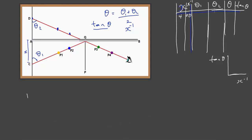From the law of reflection, the angle of incidence theta i is expected to be equal to theta r, the angle of reflection. Now, how does theta i relate to theta 1 and theta 2? From geometry, line AC is parallel to line PQ. Because they are parallel, angle theta 1 and angle theta i are alternate angles, and alternating angles are equal. Therefore, theta 1 is equal to theta i.